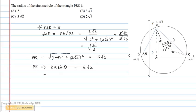Since PR is equal to 6 root 2 and sin theta is root 2 by root 3, we can find that R is equal to 3 root 3 which is option B.